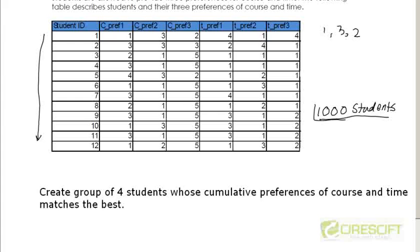That means out of these 12 students, I am going to choose group 1 based on four students. I can pick whatever students I am going to pick if they have common preferences or the cumulative score of those course preferences is the best.